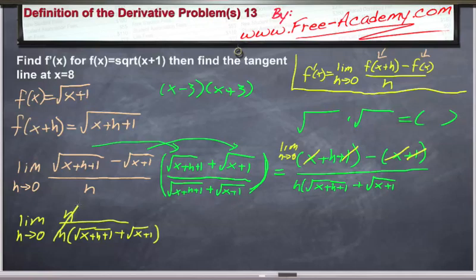Of course these h's can cancel, and then you can apply the limits. So you plug h equals 0 into the equation, you get 1 over the square root of (x+0+1) plus the square root of (x+1). And this all simplifies to be 1 over 2 times the square root of (x+1). And that is the derivative.